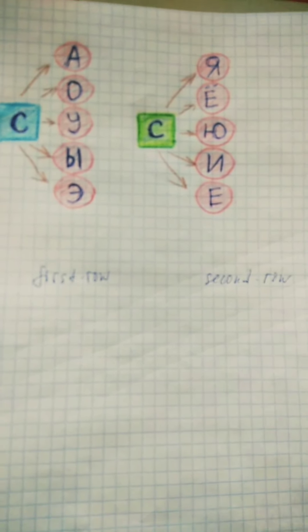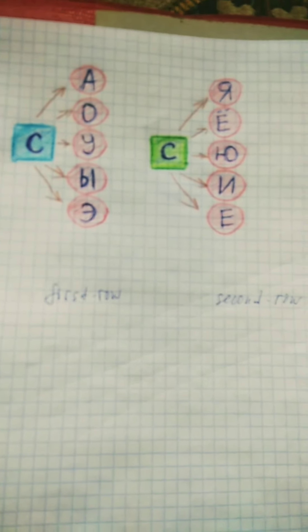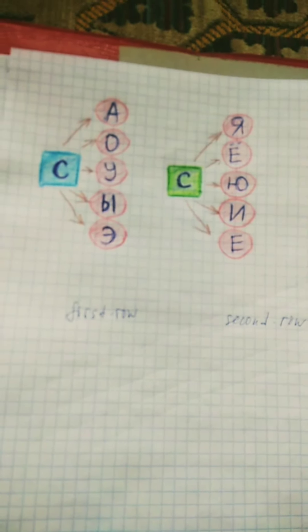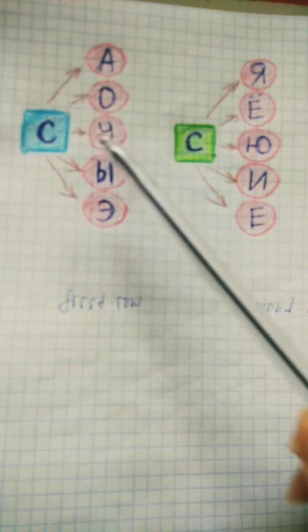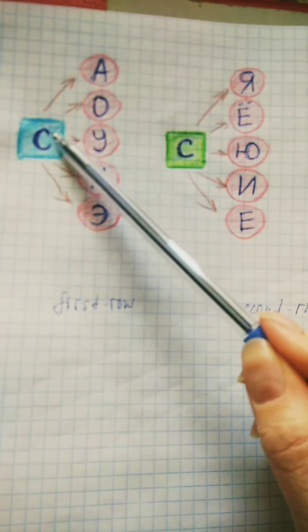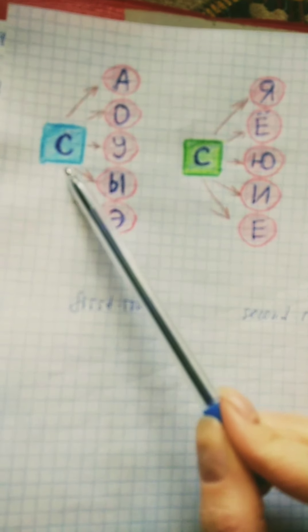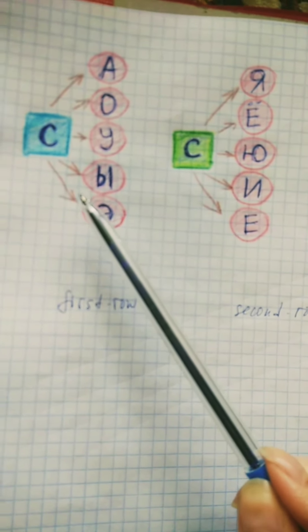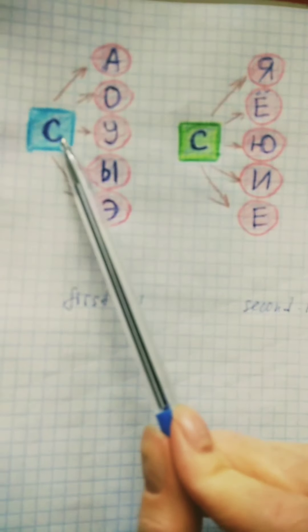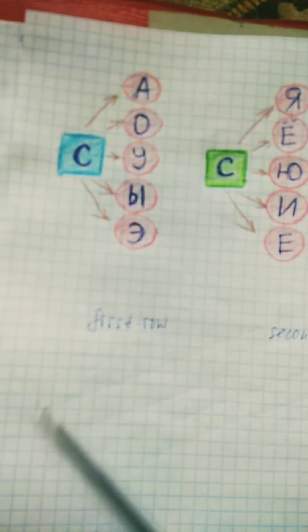So we can link our sound with vowels: Sa, so, su, si, se. And we have a blue color — it's frozen ice. It's a hard consonant.